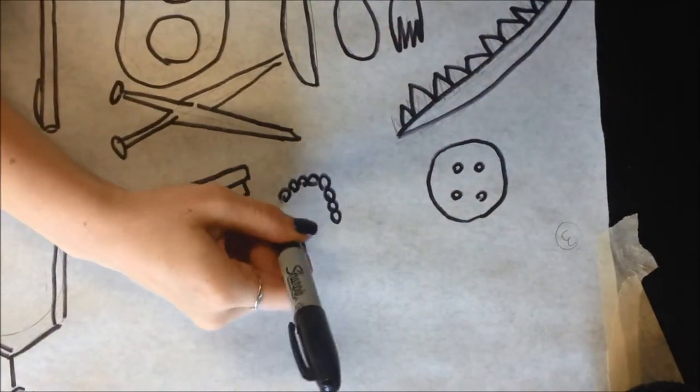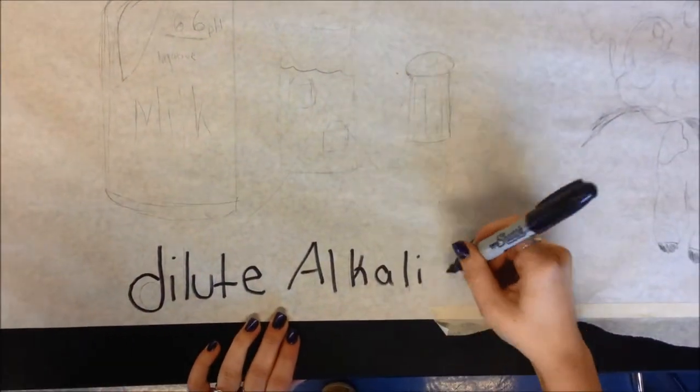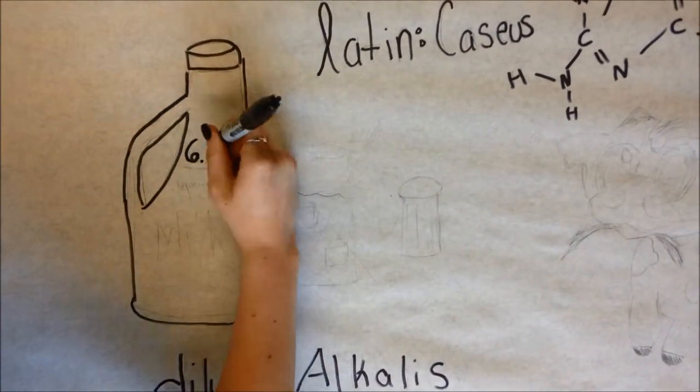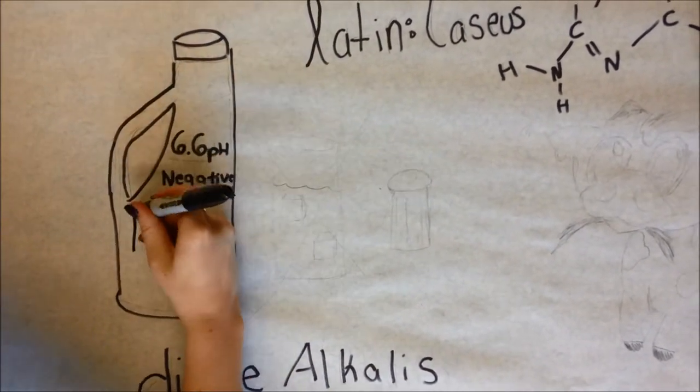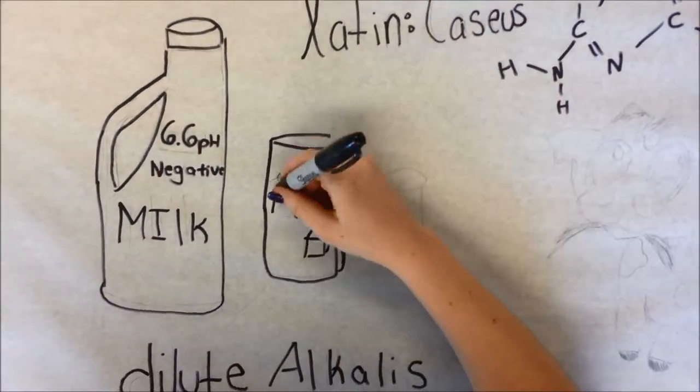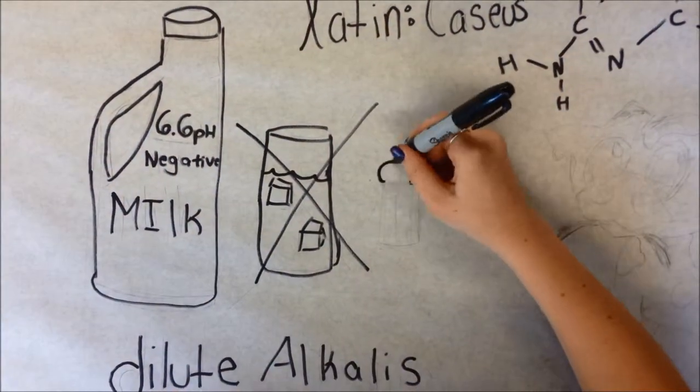Since milk's pH is 6.6, casein has a negative charge in milk. The purified protein is water-insoluble. While it is also insoluble in neutral salt solutions, it's readily dispersible in dilute alkalis and in salt solutions, such as sodium oxalate and sodium acetate.